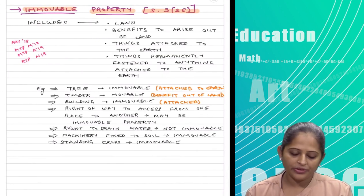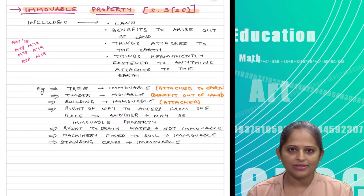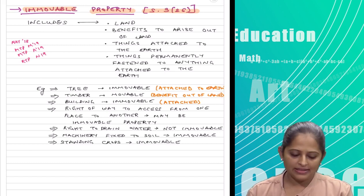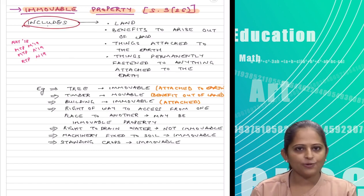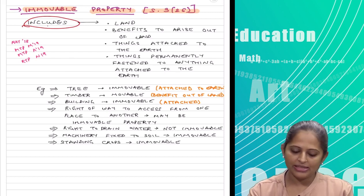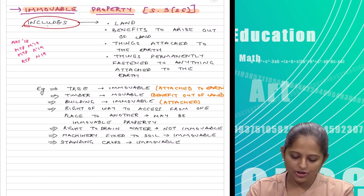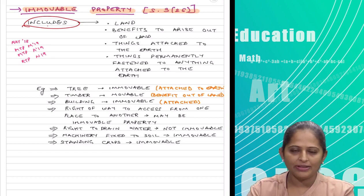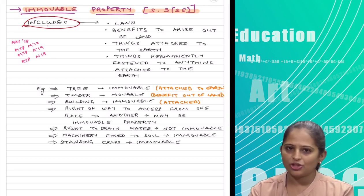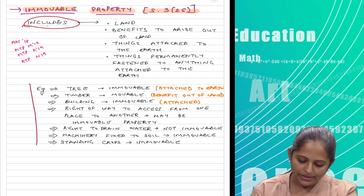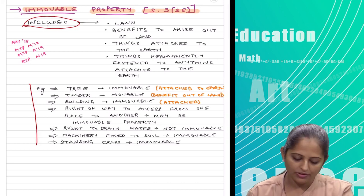Immovable property is a very important definition — it has been asked multiple times as a case study and as a subjective question. The definition uses the word 'includes', so it is an inclusive definition. It includes: land, benefits to arise out of land, things attached to the earth, and things permanently fastened to anything attached to the earth. Basically, immovable property is something which you cannot move from one place to another.